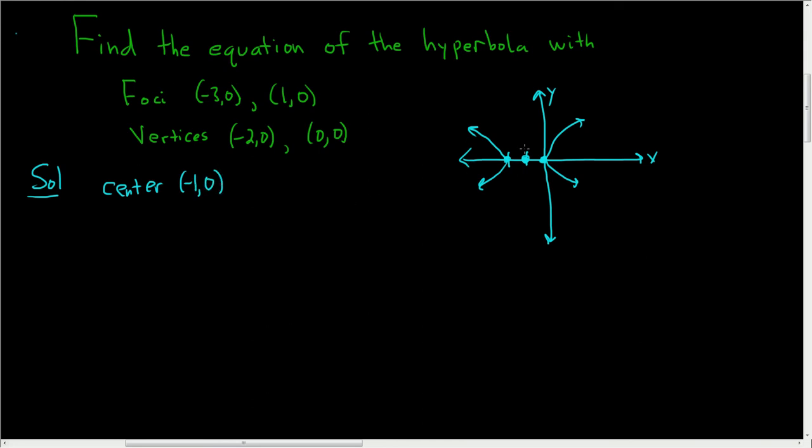Now the distance from the center to the vertex is a. So a is equal to 1 in this problem, so a is equal to 1.